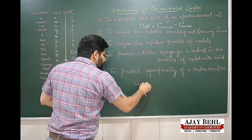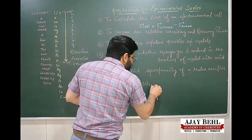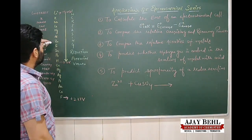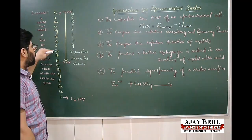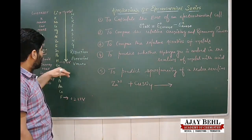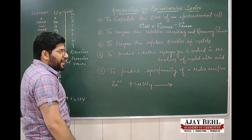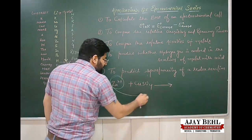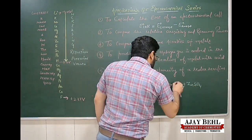For example, if we react copper sulfate with zinc: zinc appears above copper in the series, so zinc has a higher oxidation potential. Therefore, zinc will easily displace copper from copper sulfate, giving us zinc sulfate and copper ions.